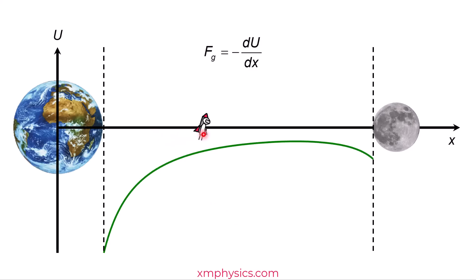This graph shows how the GPE of the rocket man varies as he travels from the Earth to the Moon. Straight away, the most interesting point is the maximum point. The GPE gradient here is zero — what does that tell you? That means the net gravitational pull at this point is zero. So this is the null point, where the Earth's and the Moon's pulls are equally strong, resulting in a net gravitational pull of zero.